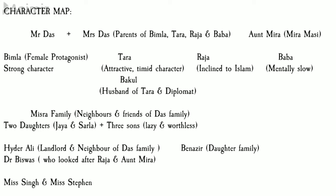Bakul is Tara's husband, an Indian diplomat. Regarding his character, he is basically an arrogant fellow who likes to impress other people and is also narcissistic — he dislikes when he is not the center of attention. Then we have Aunt Mira, one of the most central characters of this novel, also called Mira Masi. She is a distant cousin of Mrs. Das, who is the mother of the four children. Mr. Das and Mrs. Das are the parents of Vimla, Tara, Raja, and Baba.